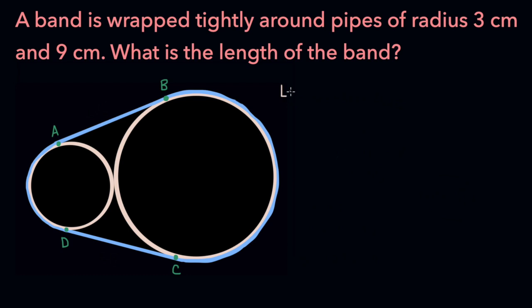So the length of the band is going to be equal to the length of the arc BC plus the length of the arc AD, whichever way you want to write it, plus the length of line segment AB plus the length of line segment CD.